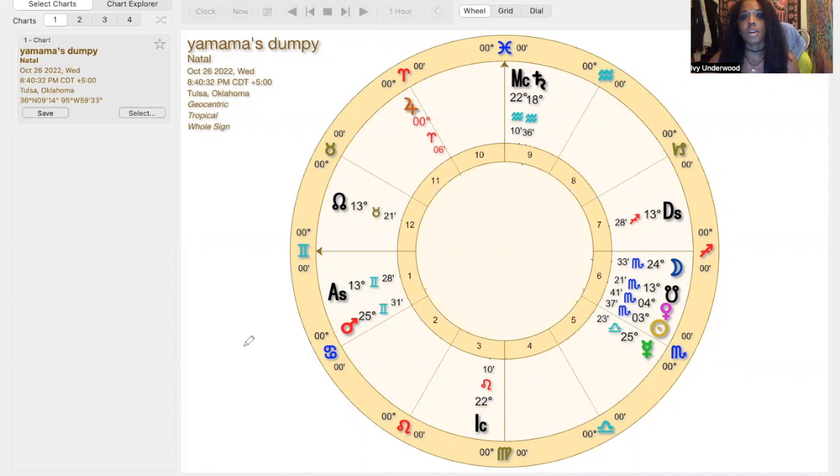Alright, so this is Yamama's chart, and we're going to find out what career is best suited for her. These are going to be things that she's naturally drawn to, also things she probably already has an interest in. This is where her talents are going to be best utilized in a career. So first, you want to look at the 10th house. Why? Because the 10th house is the house of career.